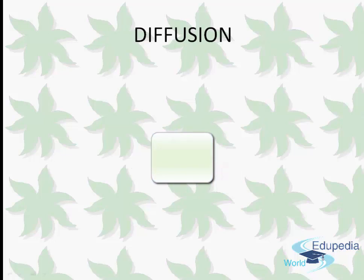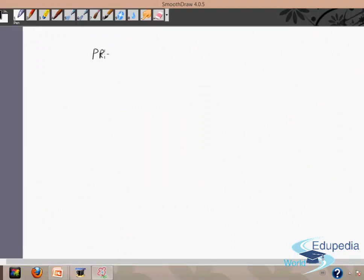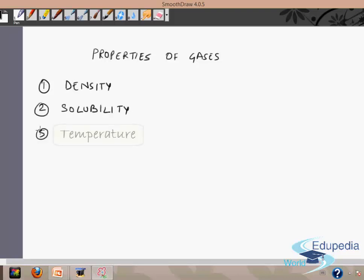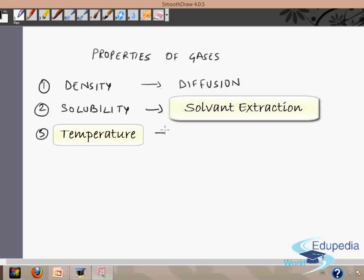First is diffusion. If we talk about the properties of gases, we have three properties: density, solubility, and temperature. These three properties are different for each gas — they vary from gas to gas. By using these properties we have three methods. For density we have diffusion, for solubility we have solvent extraction, and for temperature — also called critical temperature — we use the method called liquefaction.